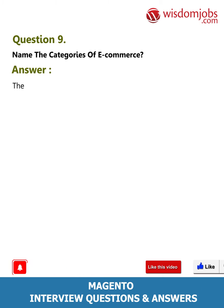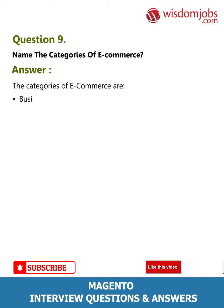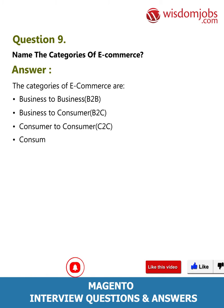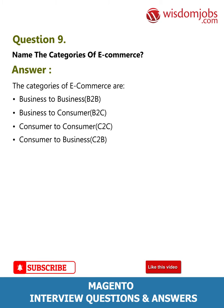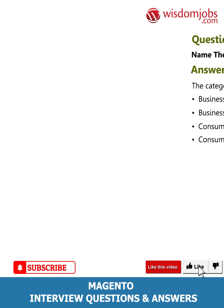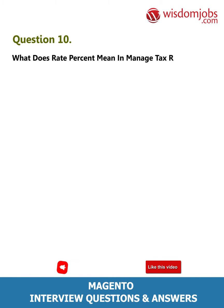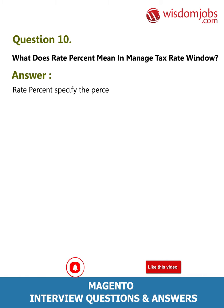Question 9: Name the categories of e-commerce. Answer: The categories of e-commerce are Business to Business (B2B), Business to Consumer (B2C), Consumer to Consumer (C2C), and Consumer to Business (C2B).